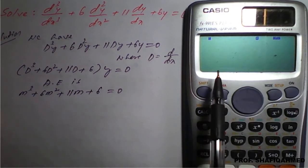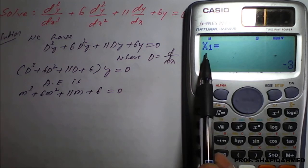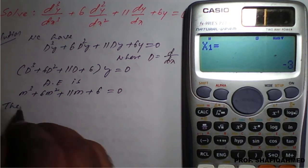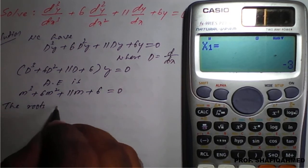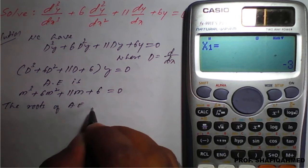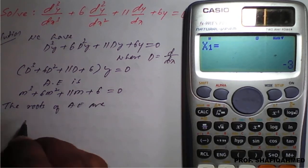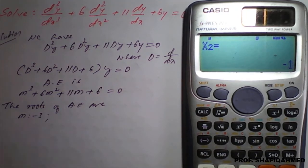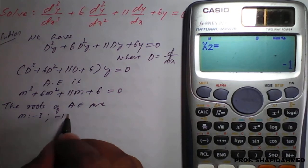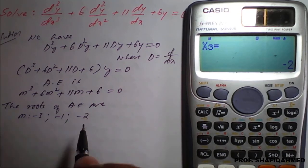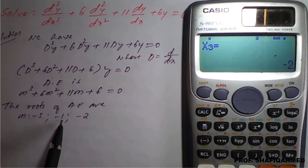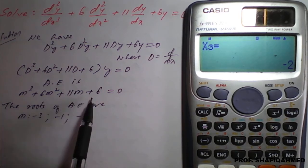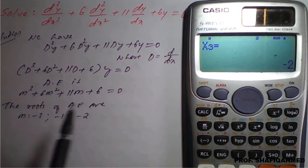And see here, the roots. First root is minus 3. The roots of auxiliary equation are: first root is minus 3, next is minus 1, next is minus 2. So we got minus 3, minus 1, minus 2. These are the roots of the given cubic equation. With the help of calculator, we got these roots. Now we will go for the complementary function and then the general solution.